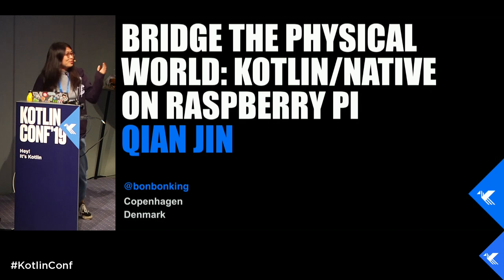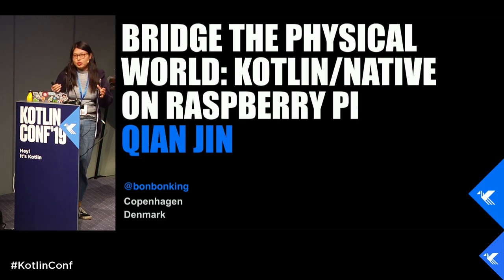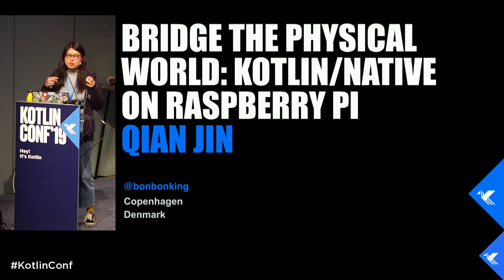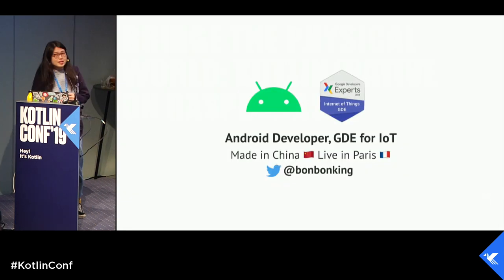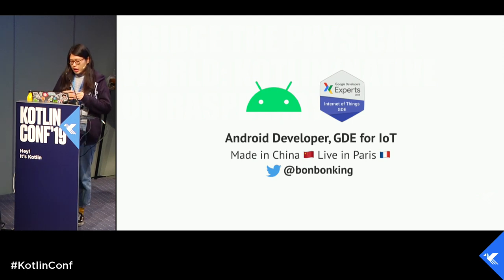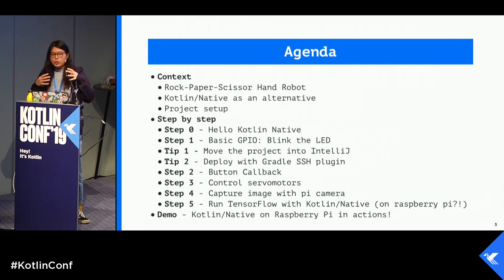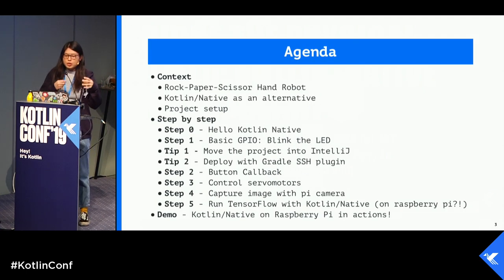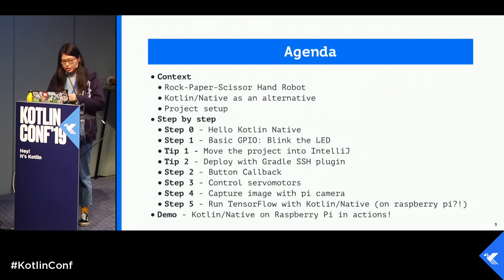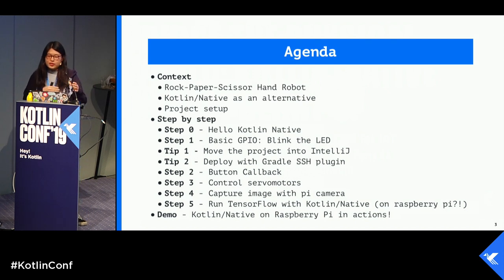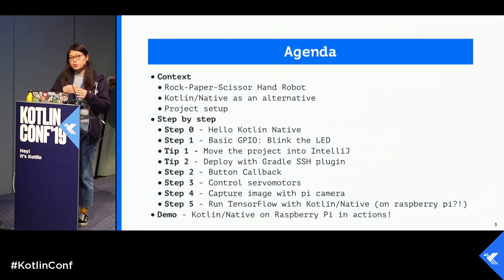Today I'm going to talk about something kind of marginal and experimental, which I find a lot of fun exploring. My name is Qian. I'm originally from China and I work and live in Paris as an Android developer and I'm also a GDE for IoT. Today I will start by giving you some context about why I started working with this kind of weird combination of technology and how I discovered step by step how to make it work.